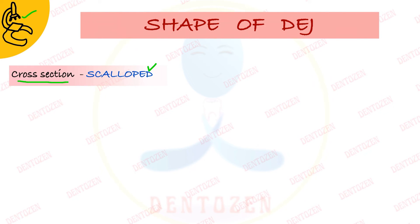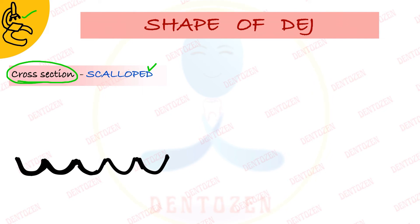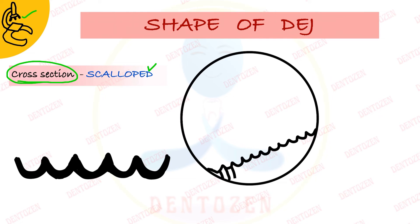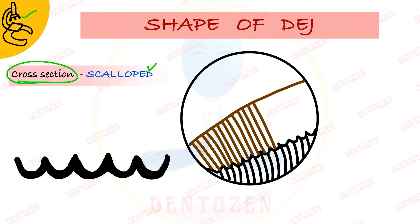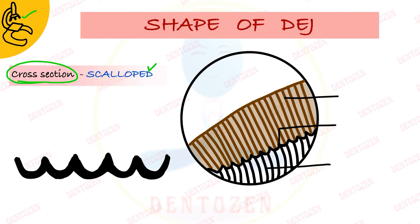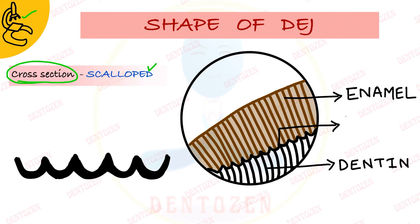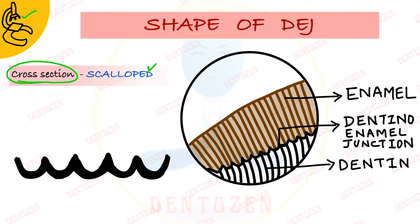When asked about the shape of this junction, mention it as a scalloped appearance, which is seen in the microscope in the cross section of the tooth. For the diagram, draw this junction as a curved appearance. Below it, draw the dentinal tubules, and on top, draw enamel rods. Label the bottom as dentine, the top as enamel, and the junction in between.